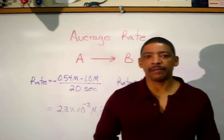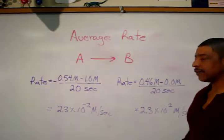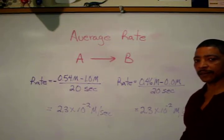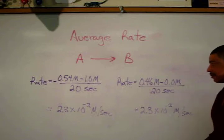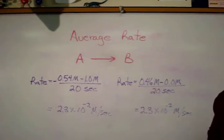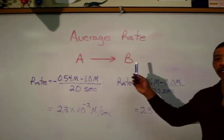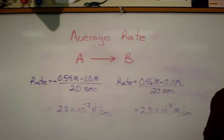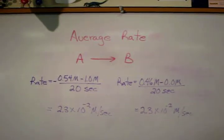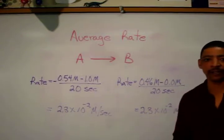The average rate may also be calculated by observing the appearance of product B. In this example, after 20 seconds, the final concentration of product B was 0.46 molar. To calculate the rate, simply subtract the initial concentration of 0.0 molar from the final concentration of 0.46 molar and then divide by 20 seconds. Since B is being formed in this reaction, there is no negative sign in this formula. Therefore, the rate in terms of the formation of product B is 2.3 × 10⁻² molar per second, which is identical to the rate of disappearance of reactant A.